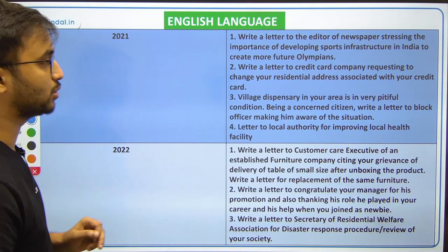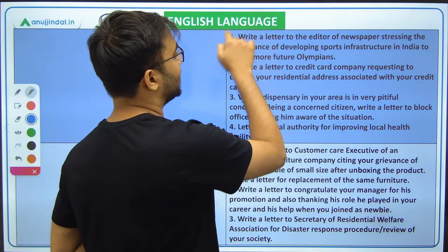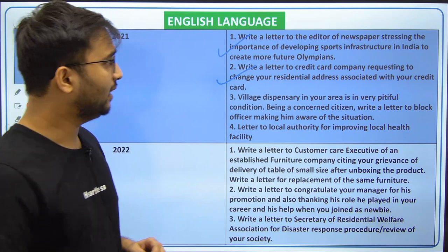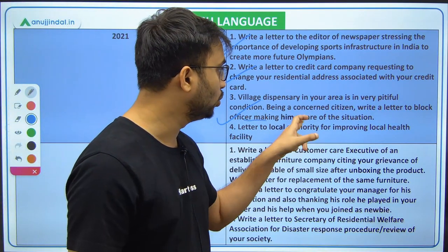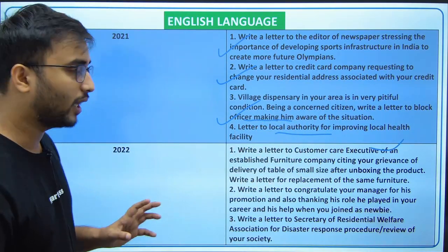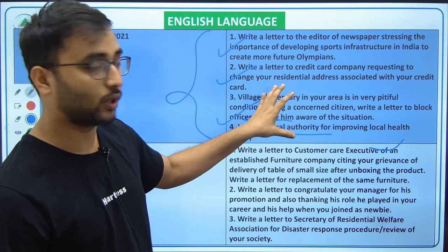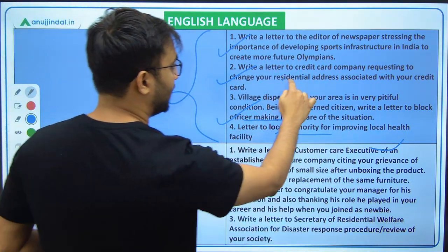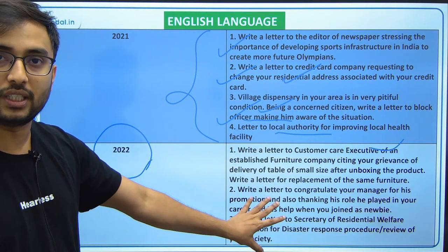Options were given for the letters, but the periphery of letter topics increased. In 2021 and 2022, letters became very difficult. Topics included: a letter to the editor stressing the importance of developing sports infrastructure for future Olympians; a letter to a credit card company requesting a change in residential address; a letter about a village dispensary being in bad condition to the Block Development Officer; and a letter to a local authority for improving local health facilities. Subjects covered are diverse — sports, banking, governance.